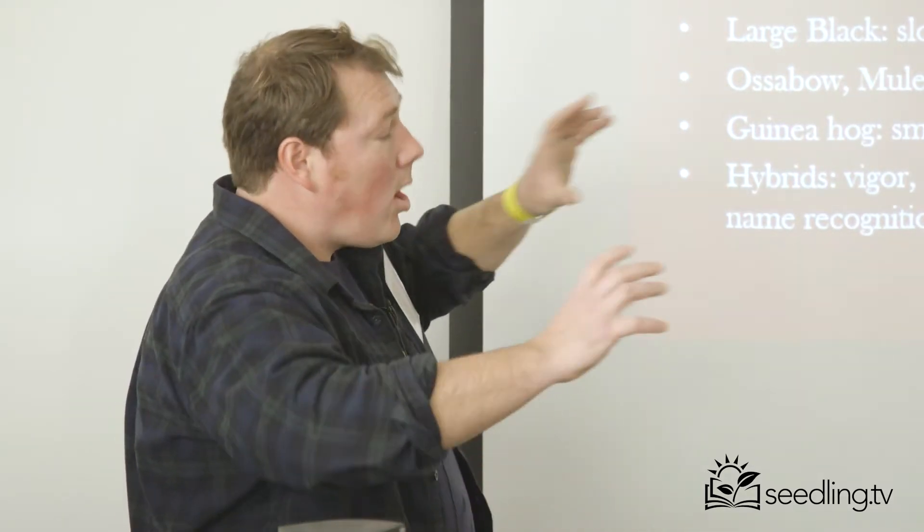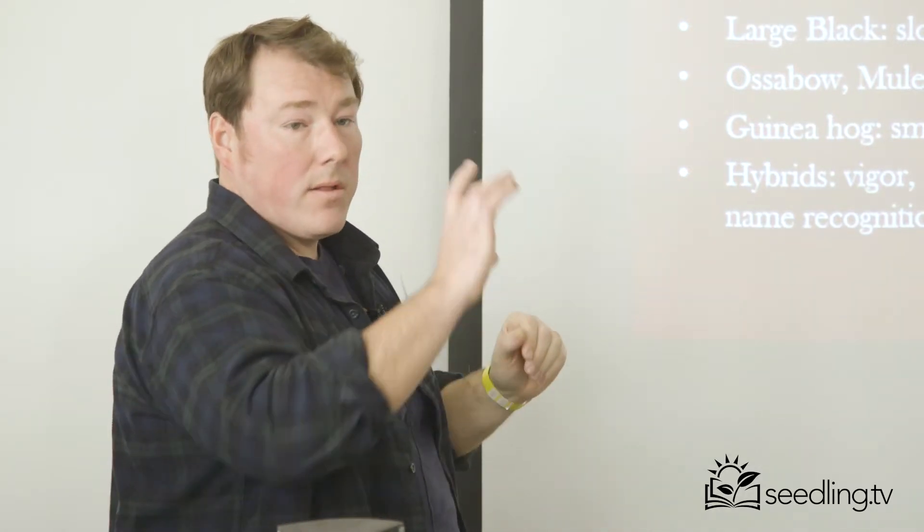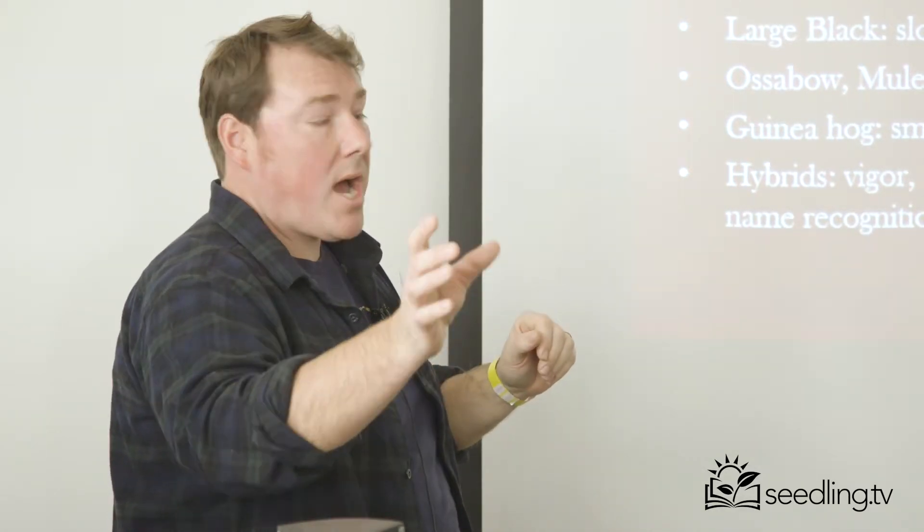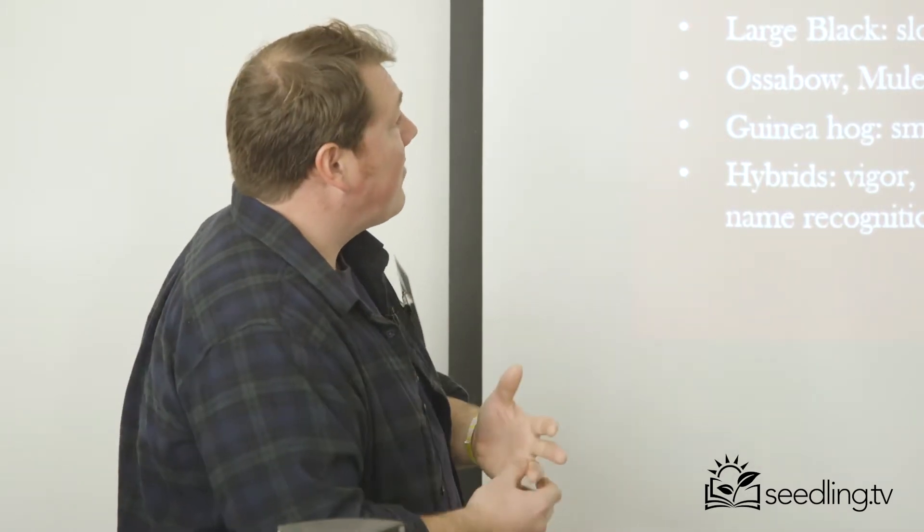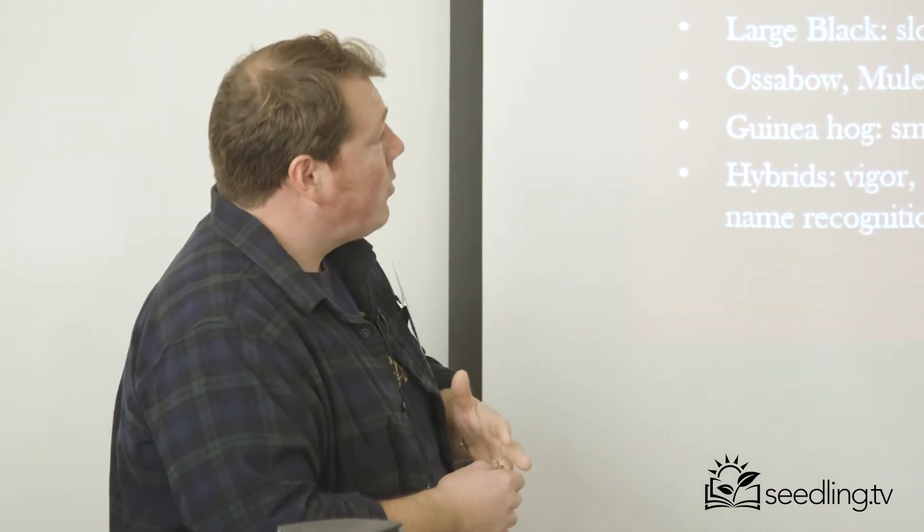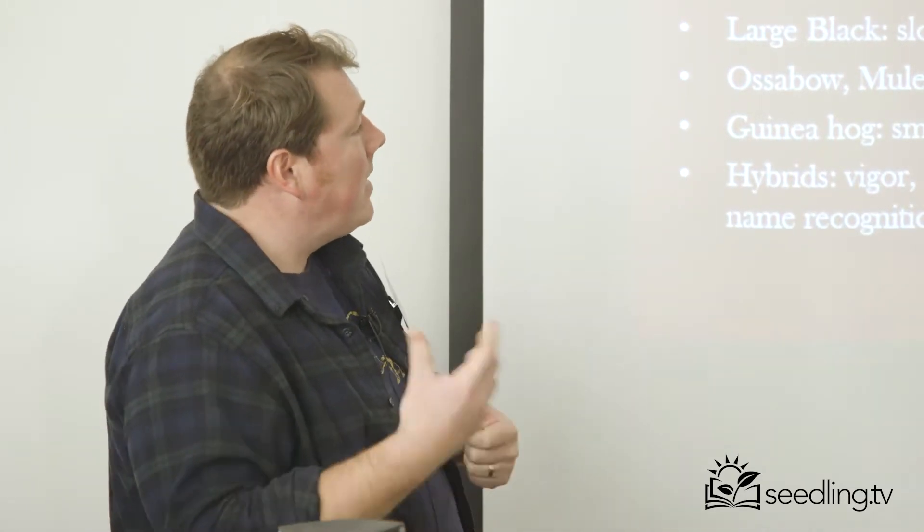So Tamworths, very long pig, long loins. The most saleable parts of a pig are the loin, basically the loin chop or the tender loin, which is inside, and then the belly to turn into bacon. So they have a lot of both. A decent fat quotient. They're not as fatty as some breeds, but they do put on a lot of that fat, which is very good.